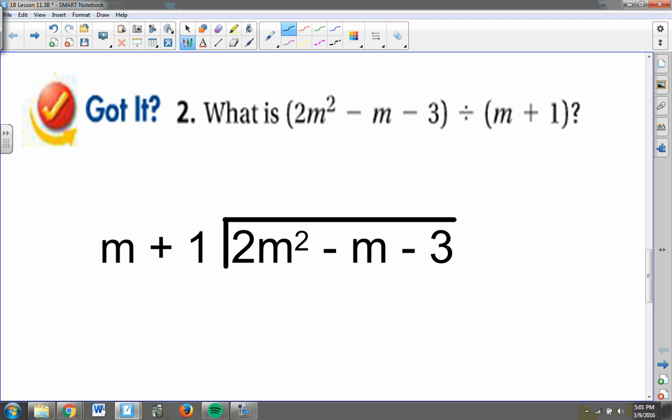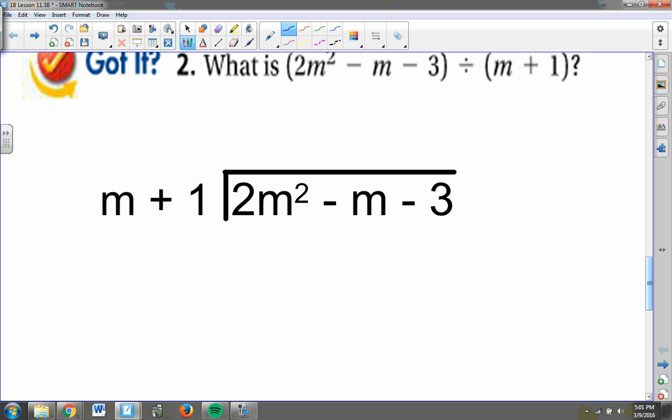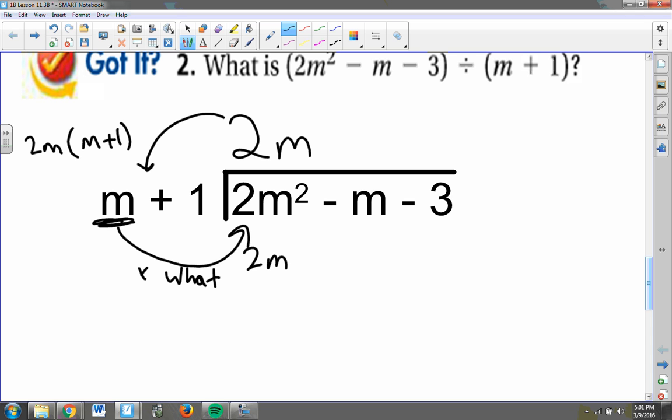Here we're dividing 2m squared minus m minus 3 by m plus 1. So the first question I will ask myself is m times what gives me 2m squared. The correct answer there is 2m. So now I'm going to take 2m and multiply it by m plus 1. 2m times m gives me the 2m squared that I wanted. 2m times 1 gives me a plus 2m.